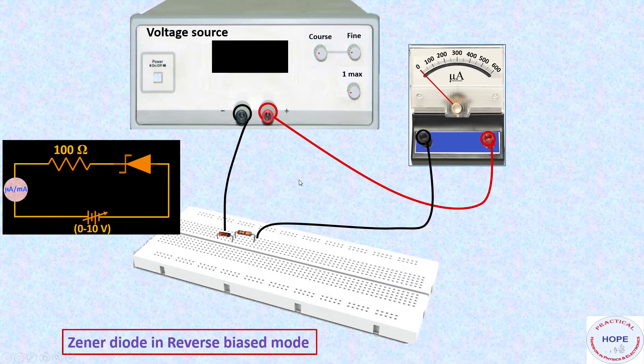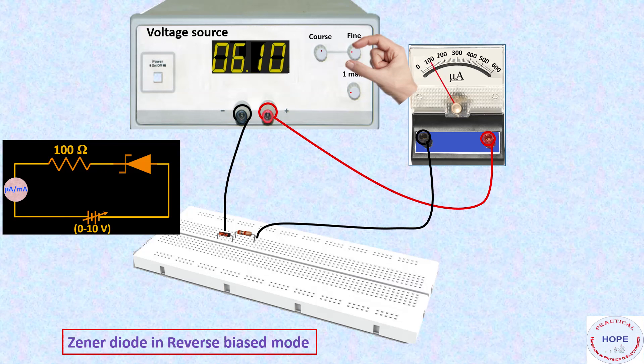Now let's switch on the circuit and increase the voltage. You can see till 6 volts, the current is very small. Now beyond 6 volts, we have to increase the voltage in very small steps, like this: 6.1, 6.2, 6.3, and 6.4.